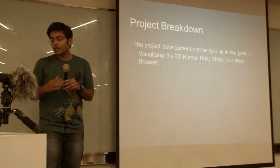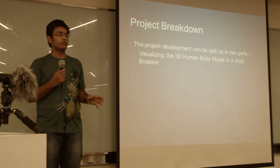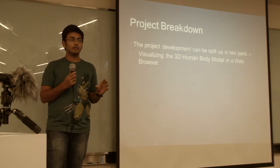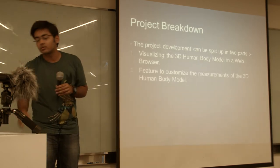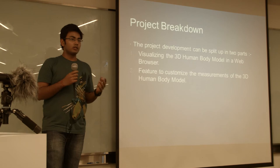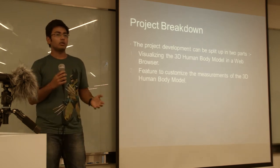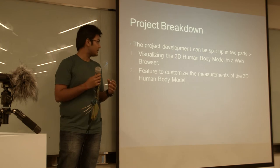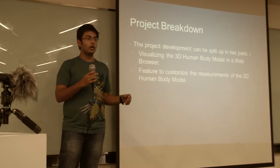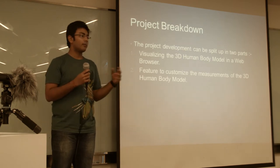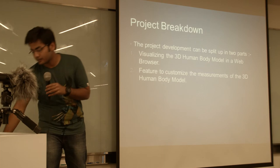The project development can be split into two parts. One is visualizing the body — you can visualize the 3D mesh and that's straightforward. The second and more challenging part was converting from one body to another. Basically you have one body and you have to change the arm length or something like that, and it's really tricky because you don't know how other parts of the body will be affected by that change.